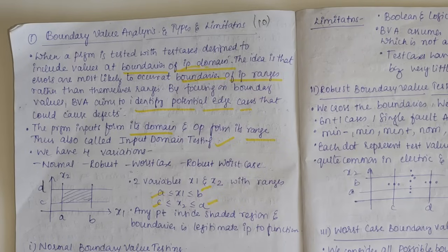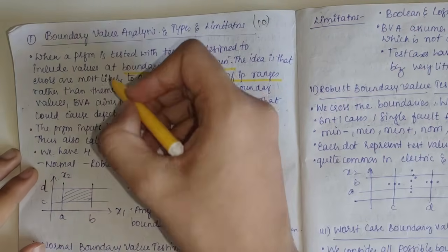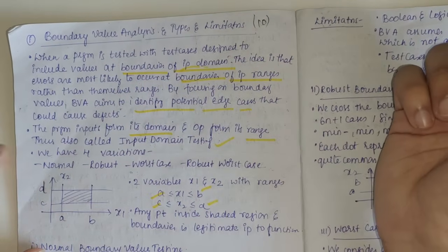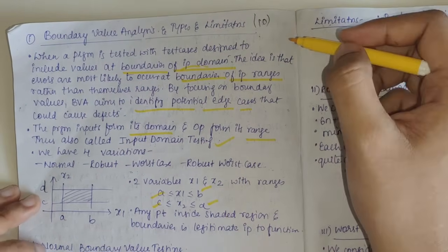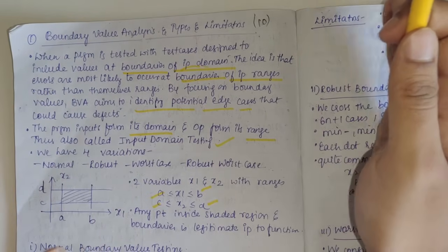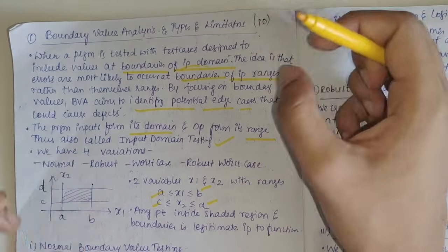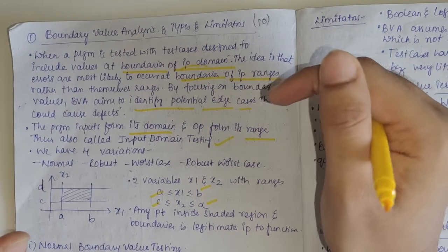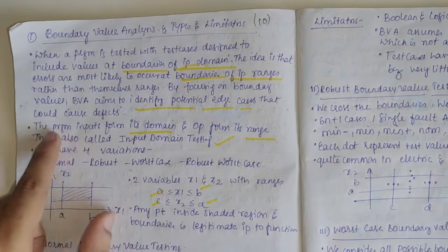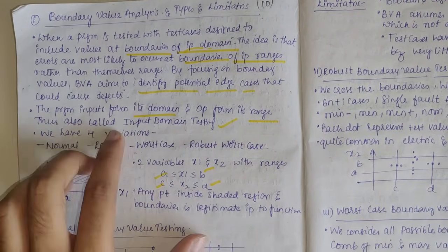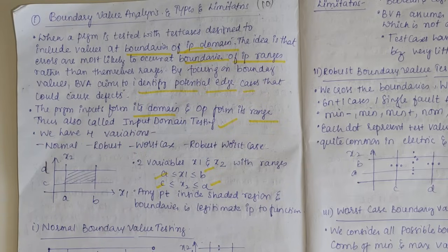If you cover this theory part, you can easily form the test cases when solving problems. In normal BVA, when a program is tested with test cases designed to include values at boundaries of the input domain, it is called boundary value testing. The idea is that errors are likely to occur at the corners or boundaries of the input range rather than inside the range. By focusing on boundary values we can detect potential errors. The input forms its domain and output forms its range, so boundary value analysis is also called input domain testing.